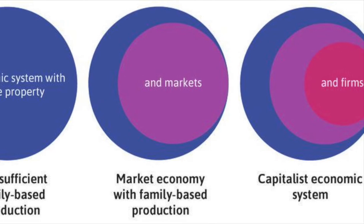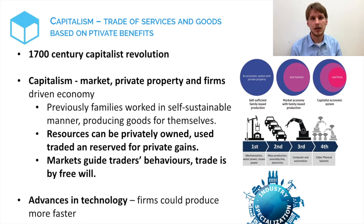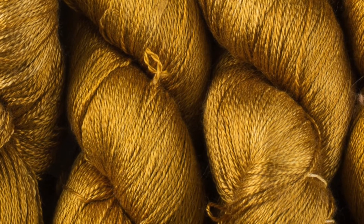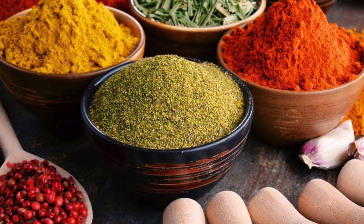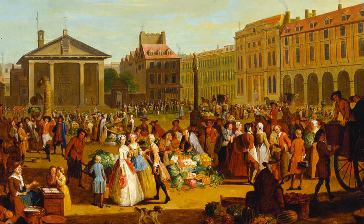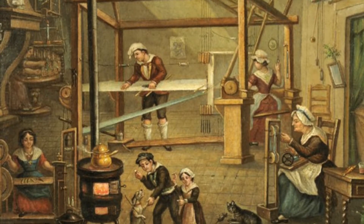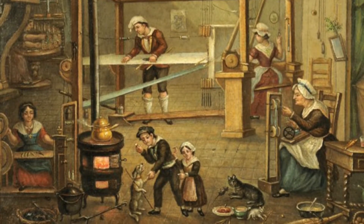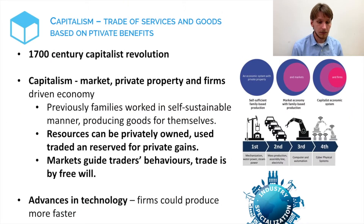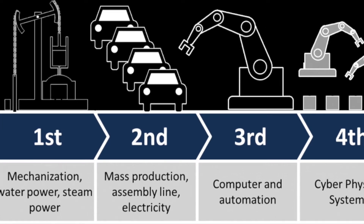This meant that markets would guide the economy. If there was demand for something, there would be more suppliers; if there was less demand, there would be fewer suppliers. If something could be traded with high profits, it would be traded more. Markets would guide traders' behaviors and trade would be by free will. A major contributor to the capitalist revolution was advances in technology during the industrial revolution, where production of different goods was facilitated exponentially.